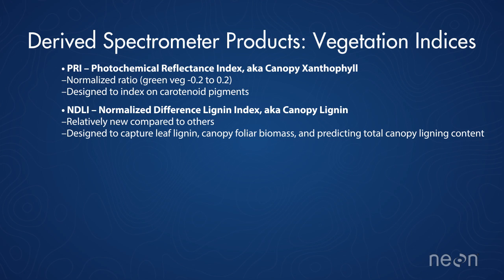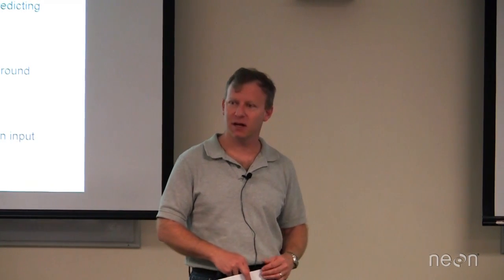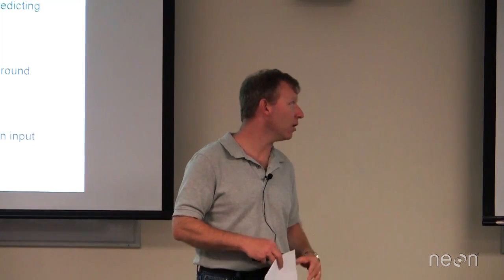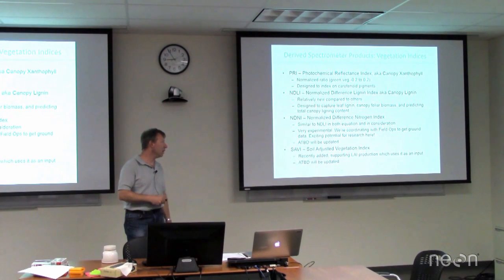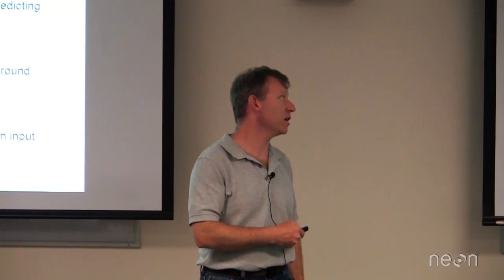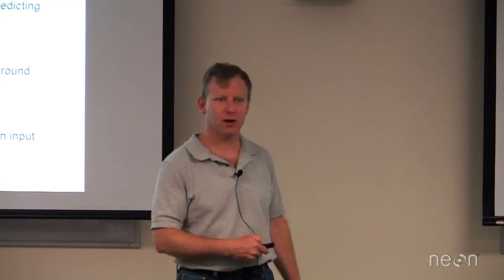Speaking of new indices, Normalized Difference Nitrogen Index is very, very new. While NDLI seems to be getting pretty good support in the literature, NDNI is a little more — I wouldn't say controversial, but not a lot of people have used it yet; it hasn't been tested in many different biomes. That makes it perfect for NEON data — let's fly everything and see what it looks like. Huge opportunities here to see how well this correlates with Courtney's team's ground measurements. I think we're going to see some excellent work there.